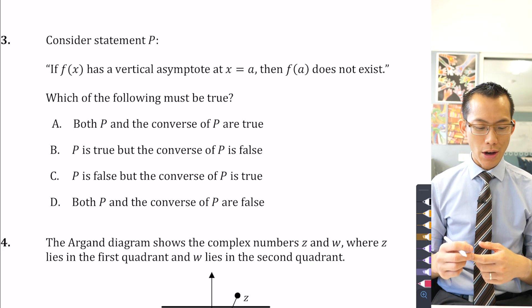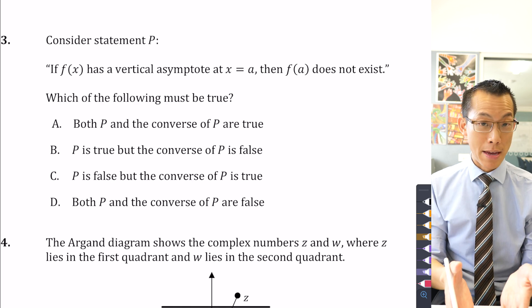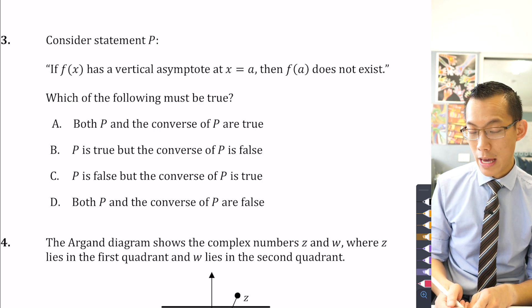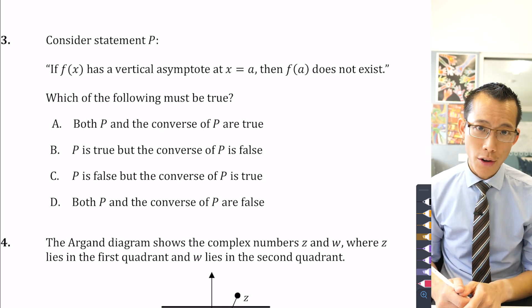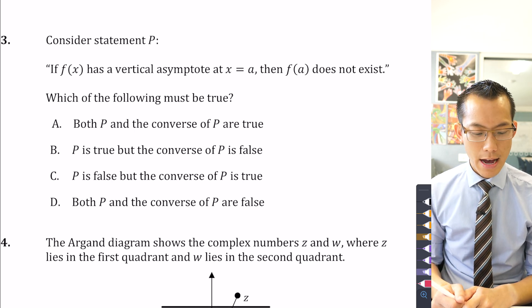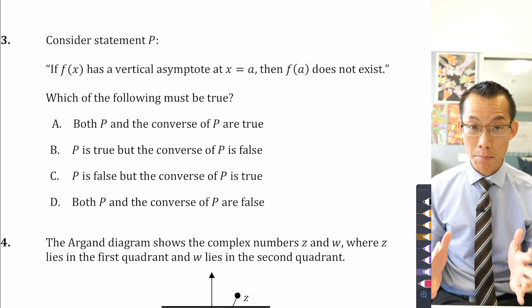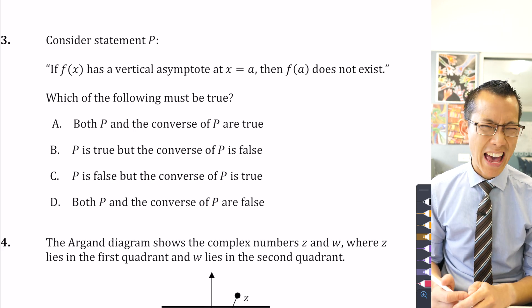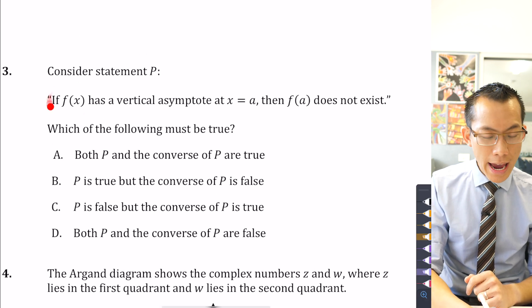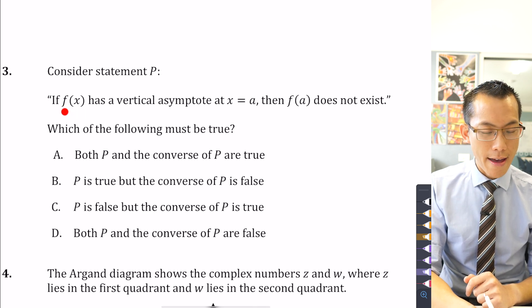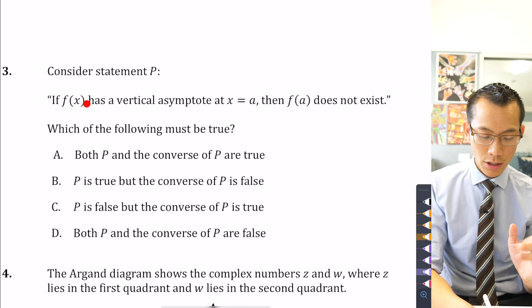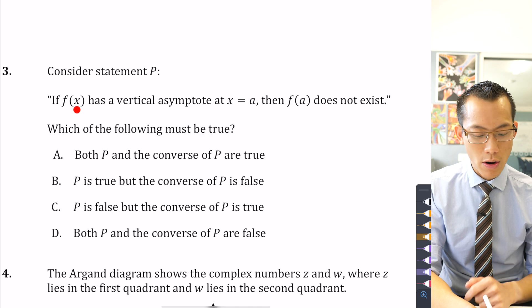So it might be helpful to first think about statement P because it's right there in front of us. If f(x) has a vertical asymptote at x equals a, does it then necessarily follow that f(a) does not exist? Now, the answer is this statement, statement P, it is true. How do I know? Well, the first piece of the puzzle is that I have to recognize when you say f(x), what that means is this has to be a function because this is function notation, right? So I'm dealing with functions, not relations. That's important for a particular reason. You'll see why in a second.